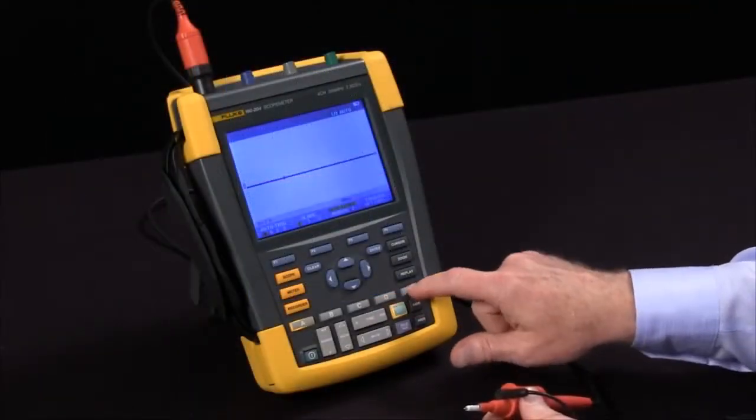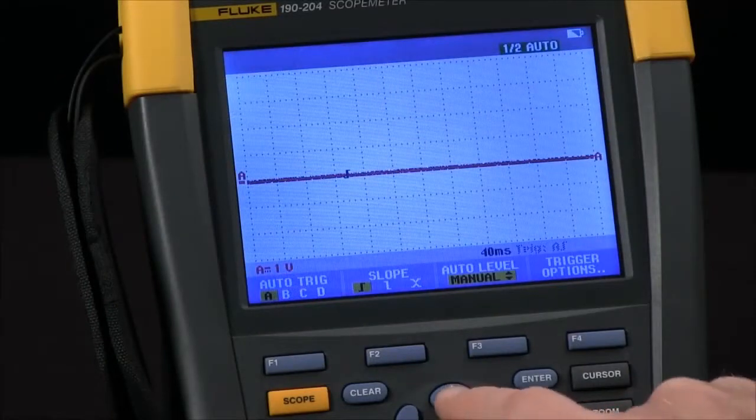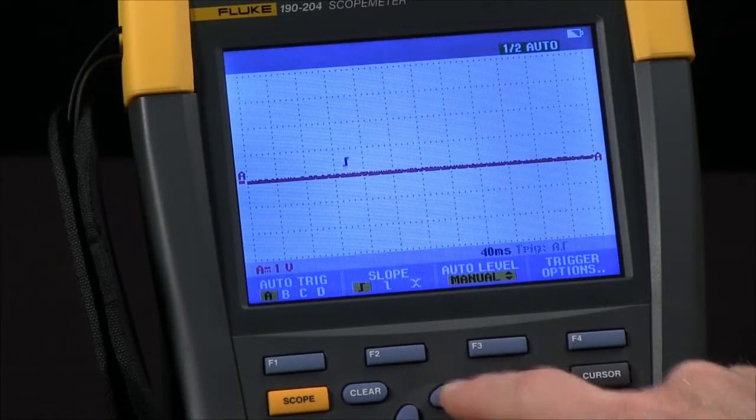Now let's go to trigger. We'll go to manual with the F3 key and move the level up slightly above my baseline.